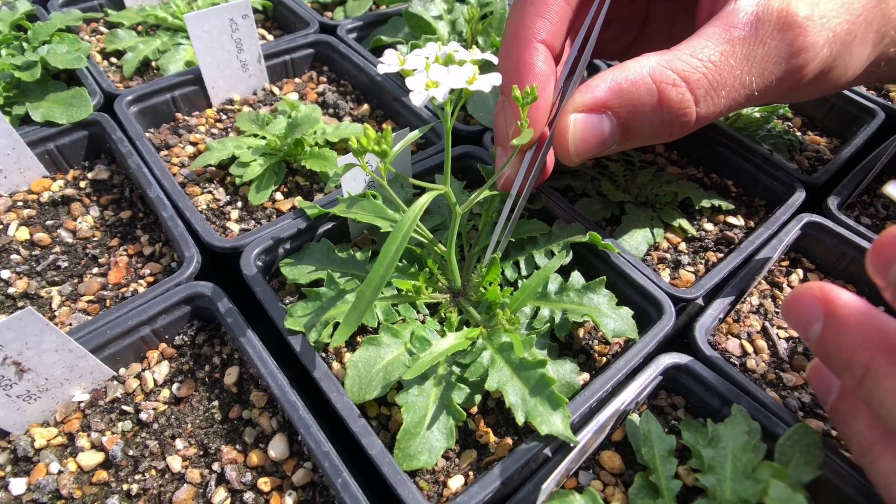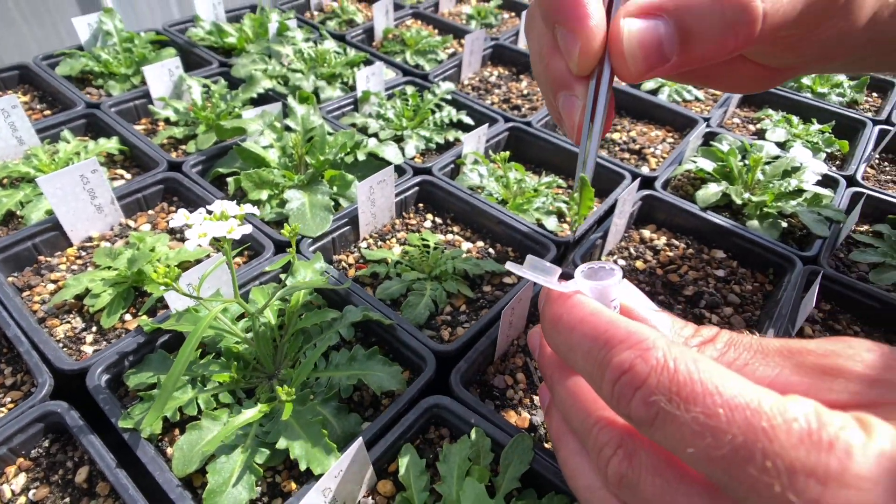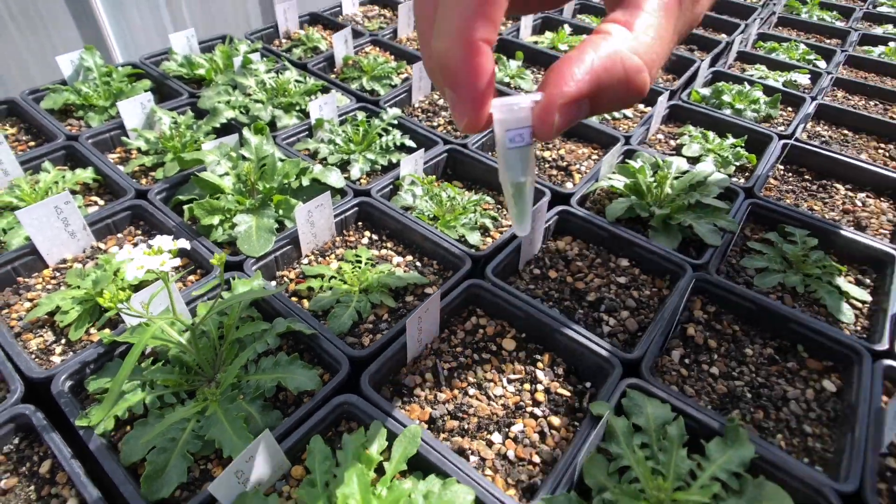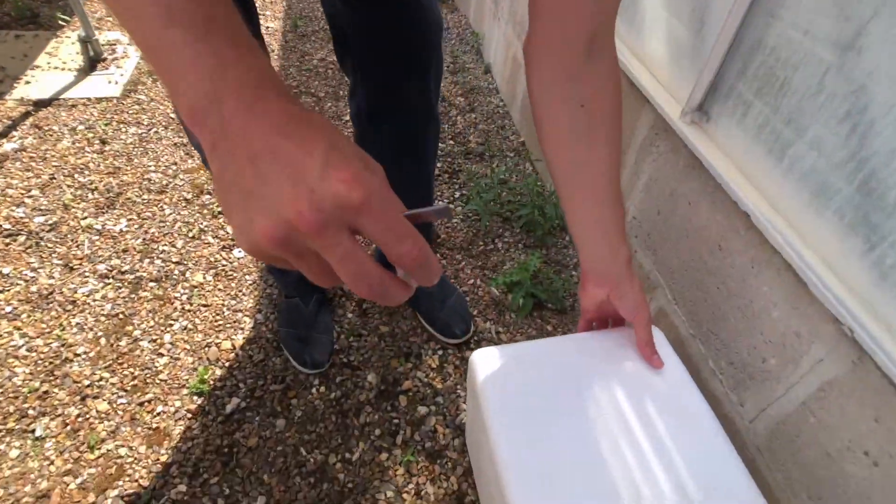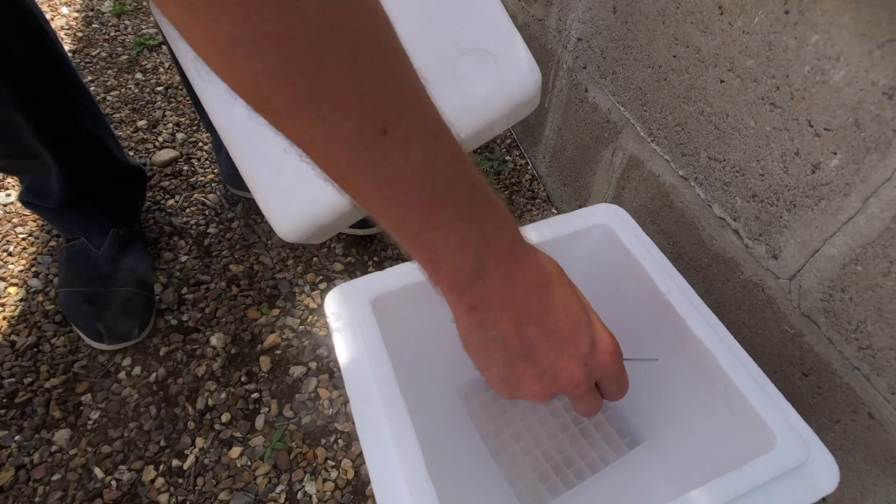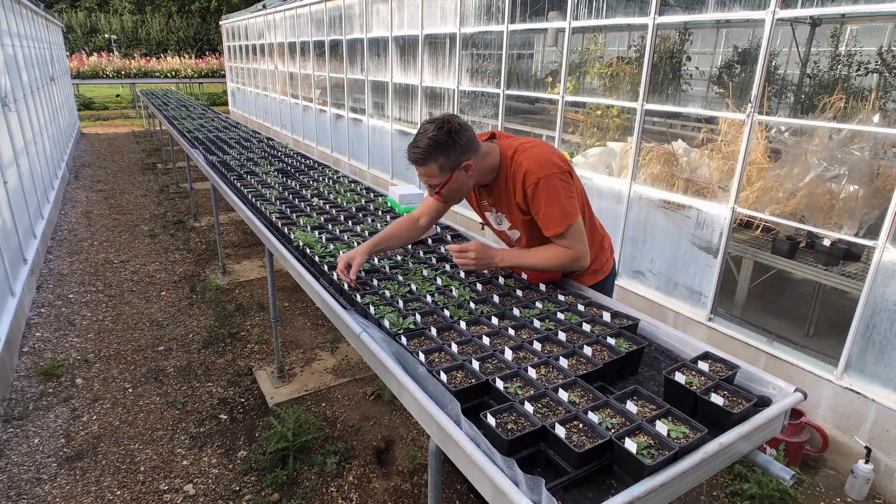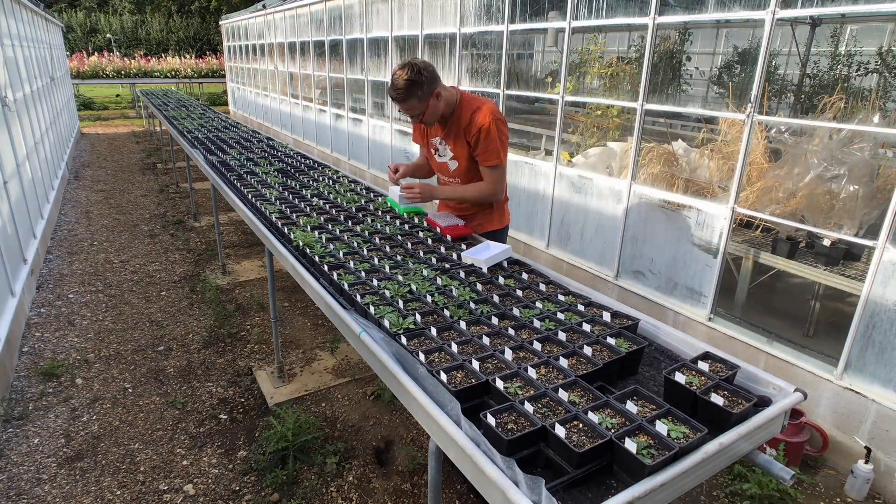To extract DNA from leaves we need to sample young leaves, put them into labelled tubes and shock freeze them in liquid nitrogen. And we sample all of the 1,000 individual plants.